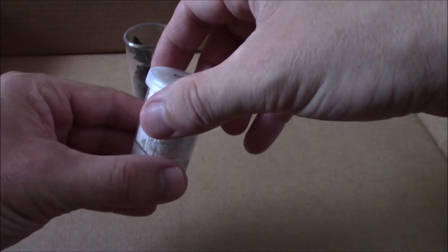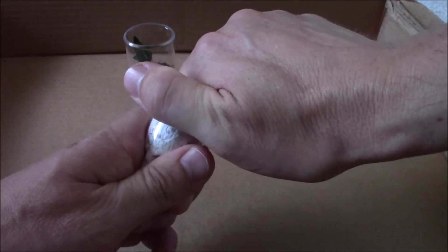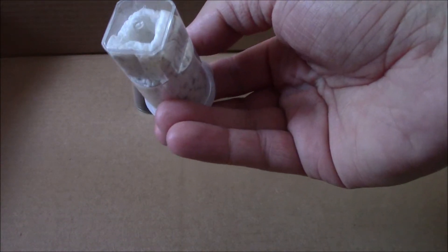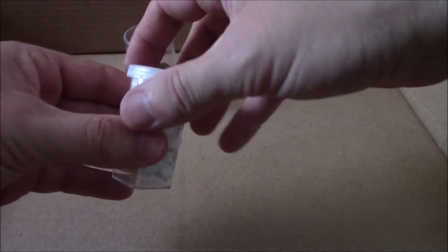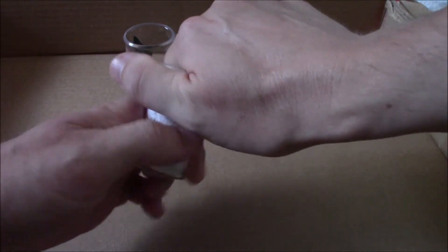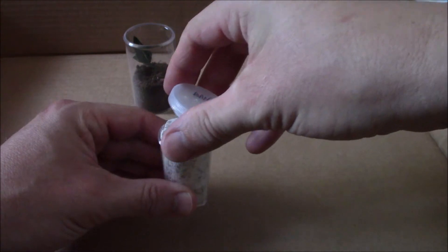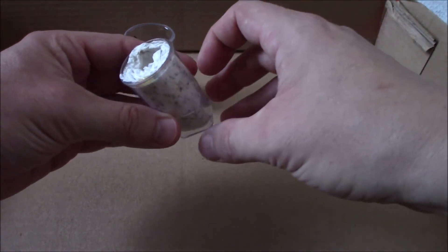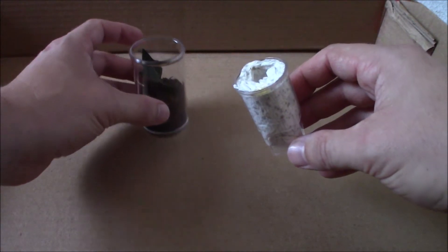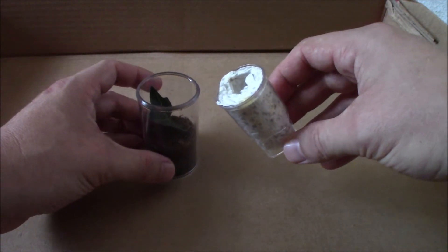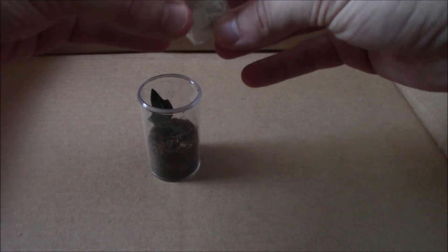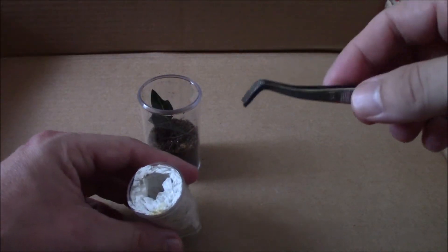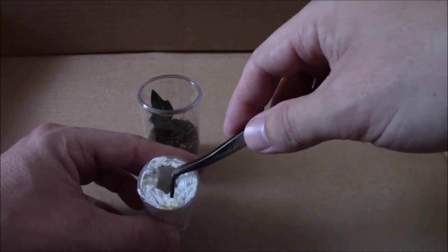All right we're going to go ahead and do the Brachypelma albopilosum first. I did check. I'm not sure if it's going to actually show up on camera. Nah probably not. There's too much glare but it is a very tiny cute little spider. It's kind of harder to transfer them when they're so small. Let's see if I can just pull this out. Just because you're afraid they're so small and delicate you're afraid to harm them.